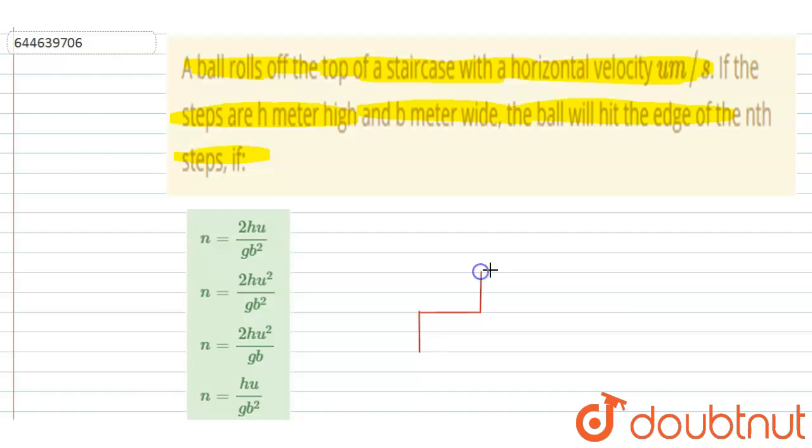So if the ball will hit the nth step, what will happen? It will travel the horizontal distance. If I say the horizontal distance, that is, let's say x direction is the horizontal distance, so displacement in horizontal direction will be this. And displacement in vertical, let's say I am saying the vertical direction as y, so it will